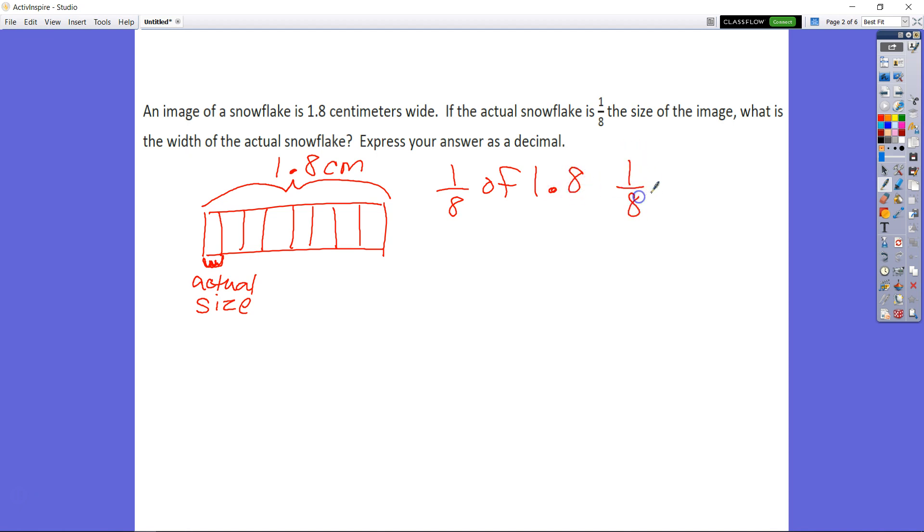So we're going to take a look at 1 eighth of 1 and 8 tenths. So we have 1 eighth times 1 and 8 tenths, which is the same thing as 18 tenths. And we can cross-cancel here. 8 divided by 2 is 4 and 18 divided by 2 is 9. That's equal to 9 fortieths. 9 times 1 equals 9, 4 times 10 equals 40.